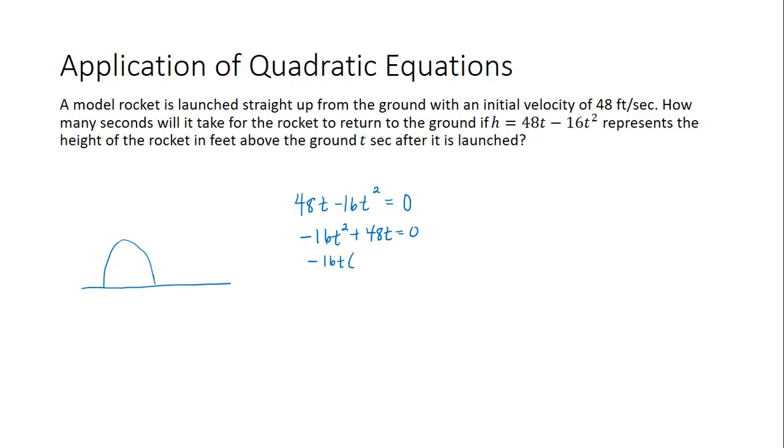When we factor out negative 16t, we get the expression t minus 3. Therefore, the equation in factored form is negative 16t times the expression t minus 3 equals 0. To solve, we set each of those factors equal to 0.